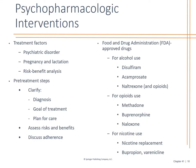When we look at psychopharmacological interventions, we look at treatment factors including risk-benefit analysis: Are they pregnant? Are they of childbearing age? What other psychiatric disorders are going on? We look at pre-treatment steps — the diagnosis, short-term and long-term goals, the plan of care, and what we hope to achieve. Adherence to the plan, risks and benefits, and then frequent follow-ups: How are you doing with the plan? Do we need to tweak it? Is it working? Are you able to implement it?